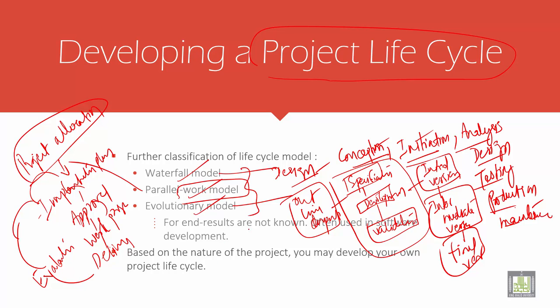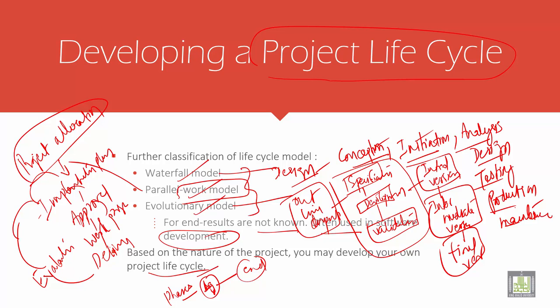Based on the end result — the end results are not always known — software is often used because iteration gives many steps, making software a better method. Based on the nature of the project, you may also have your own project life cycle, which has different phases from the beginning to the end.